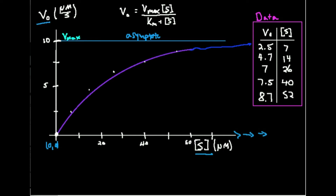That asymptote — this value right here — is the maximum rate of the enzyme. So what you would do is run a series of experiments where you put some enzyme in the mixture with some amount of substrate. Here the substrate concentration is in micromolar, and the initial rate I observe will be in micromolar per second.